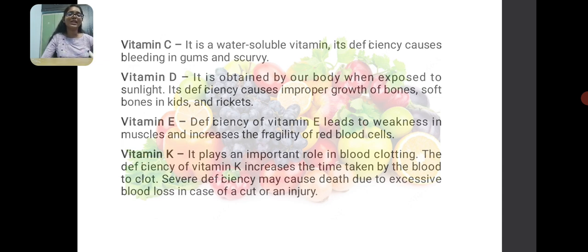Deficiency of vitamin C causes bleeding gums and scurvy. Vitamin D deficiency causes improper growth of bones, rickets, and leads to soft bones in kids.